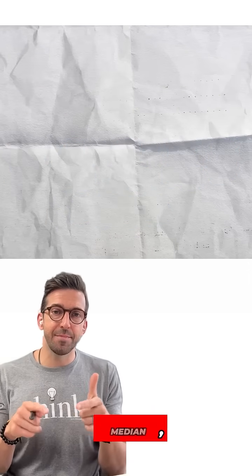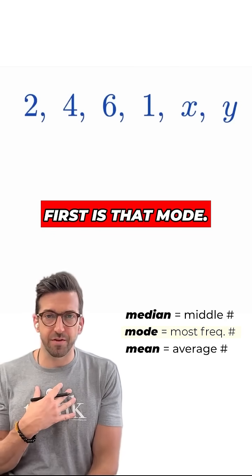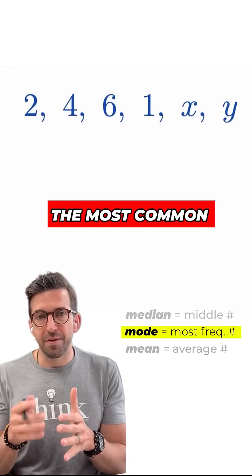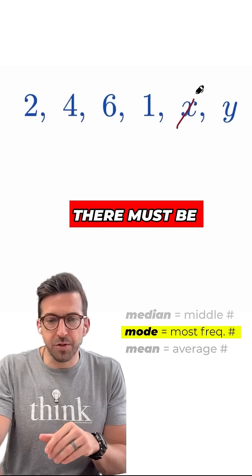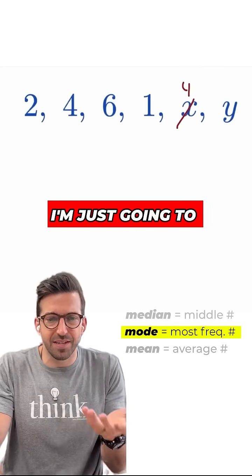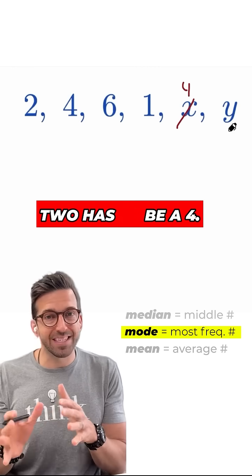Since we were told that the mean, the median, and the mode of our list is four, the easiest thing for me to work with first is that mode. The mode is four. The most common number on the list must be four. So I know for sure, without a doubt, there must be another four on this list. I'm just going to assume that one's x. It doesn't matter if it's x or y, but one of the two has to be a four.